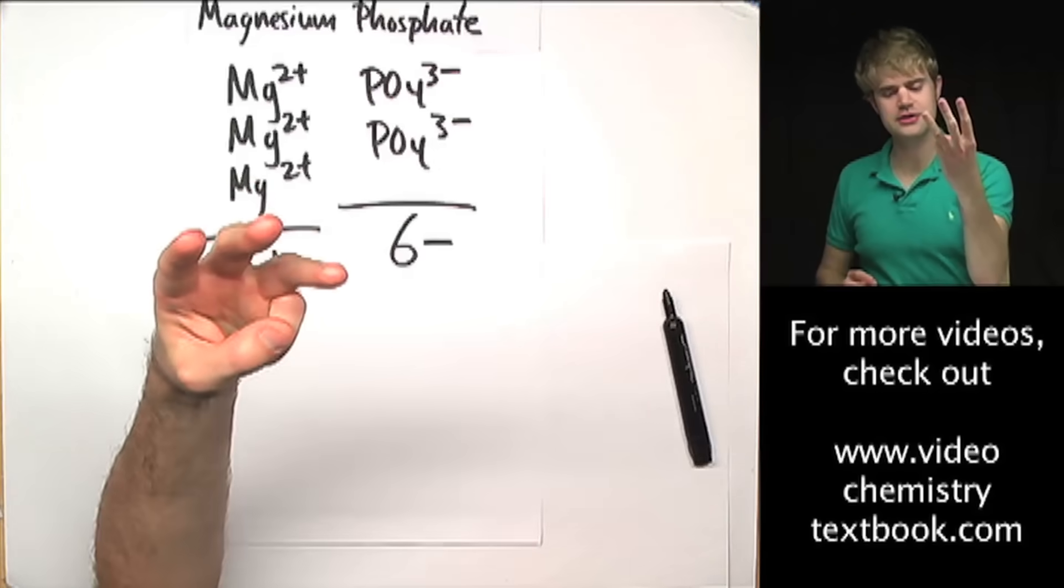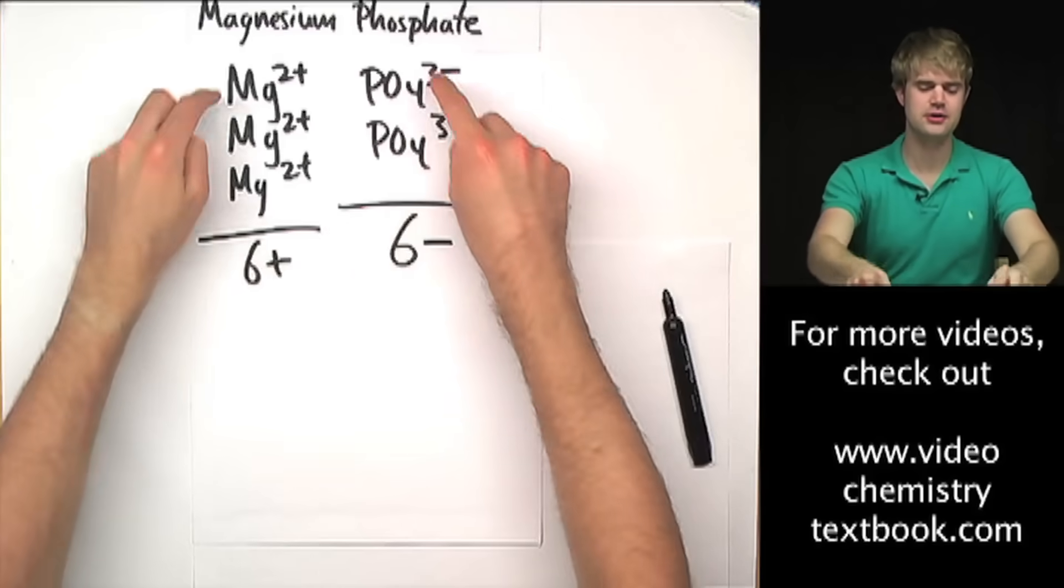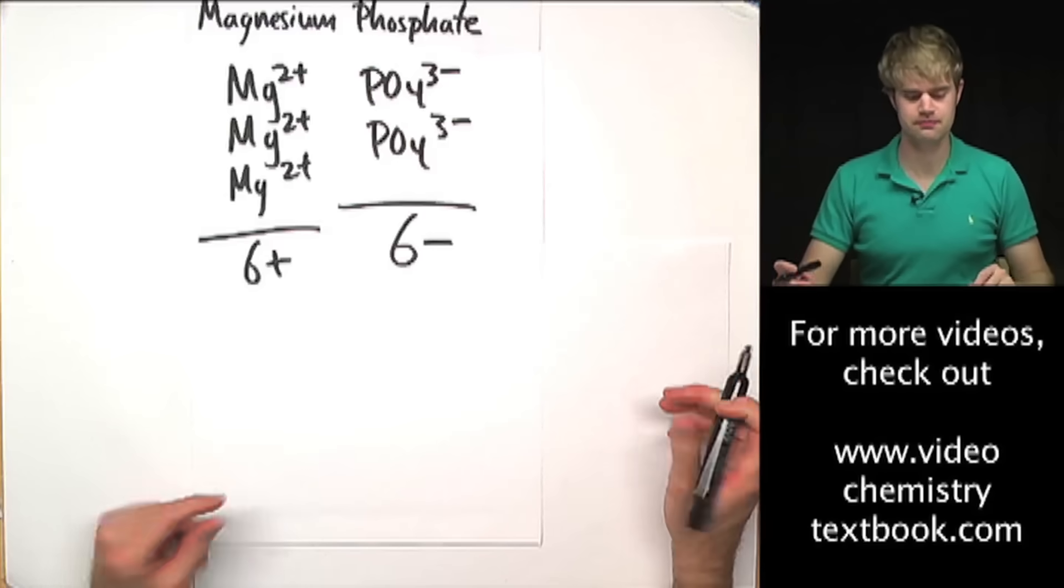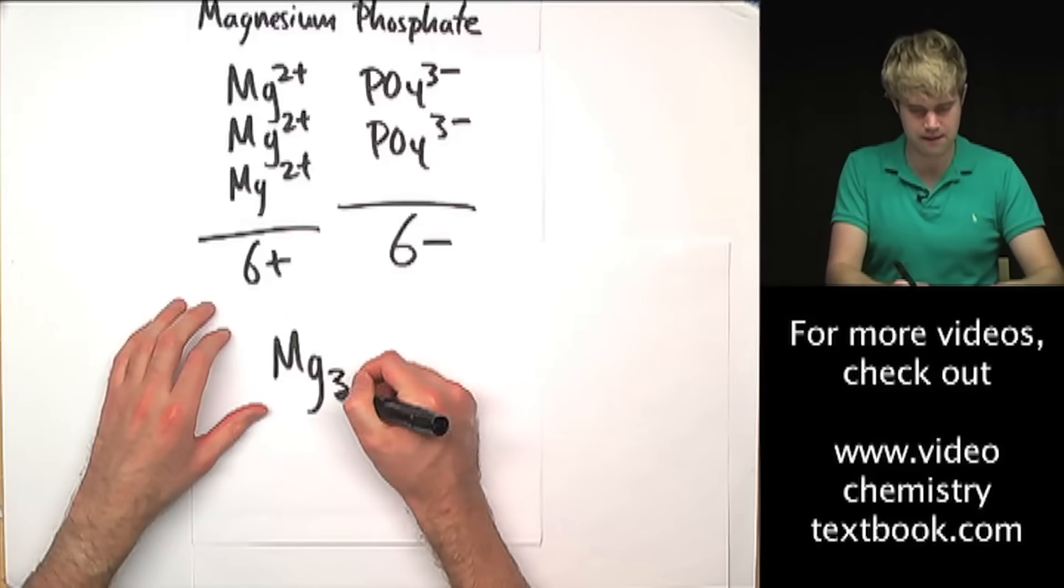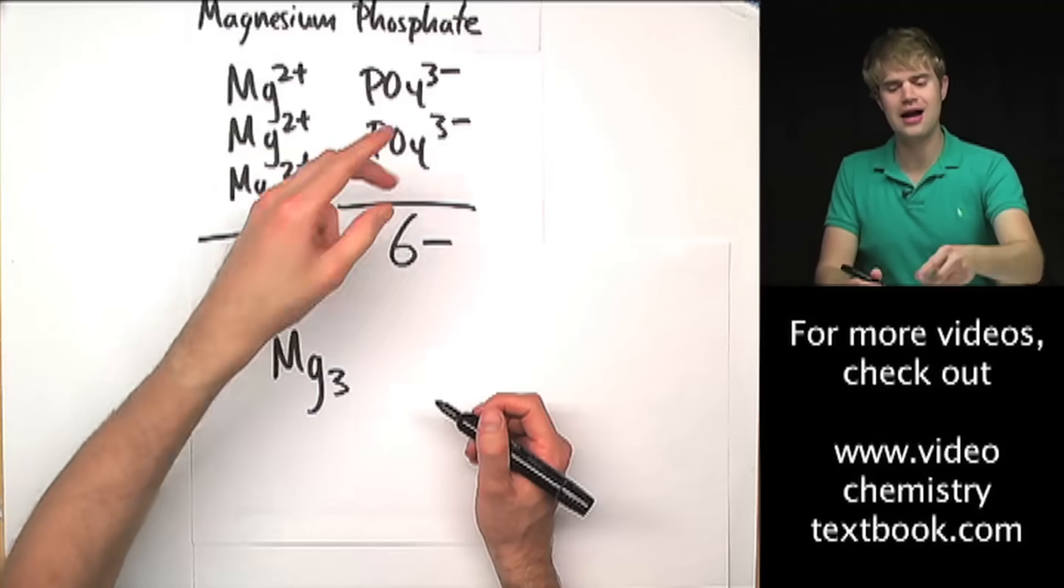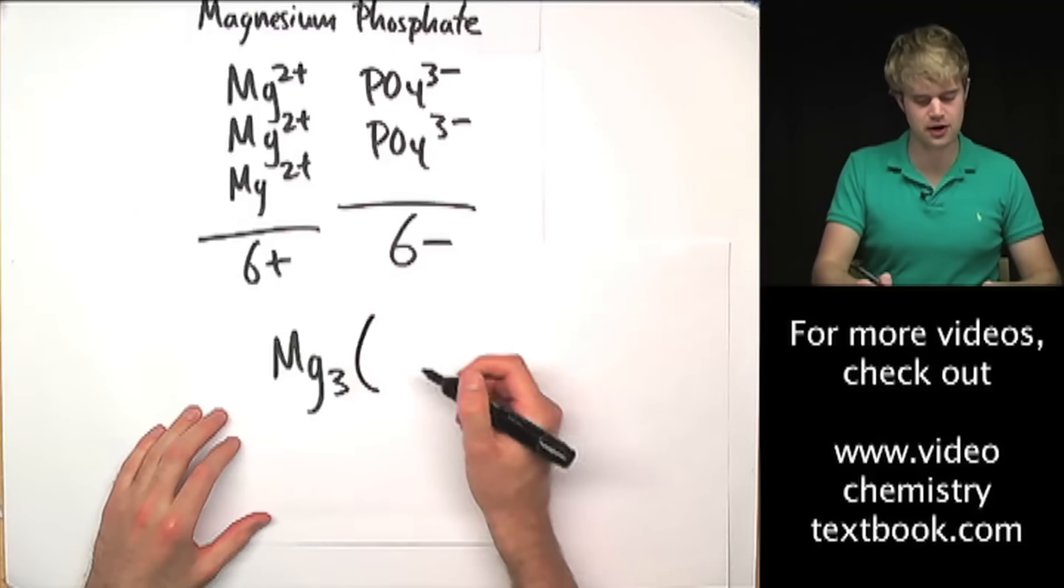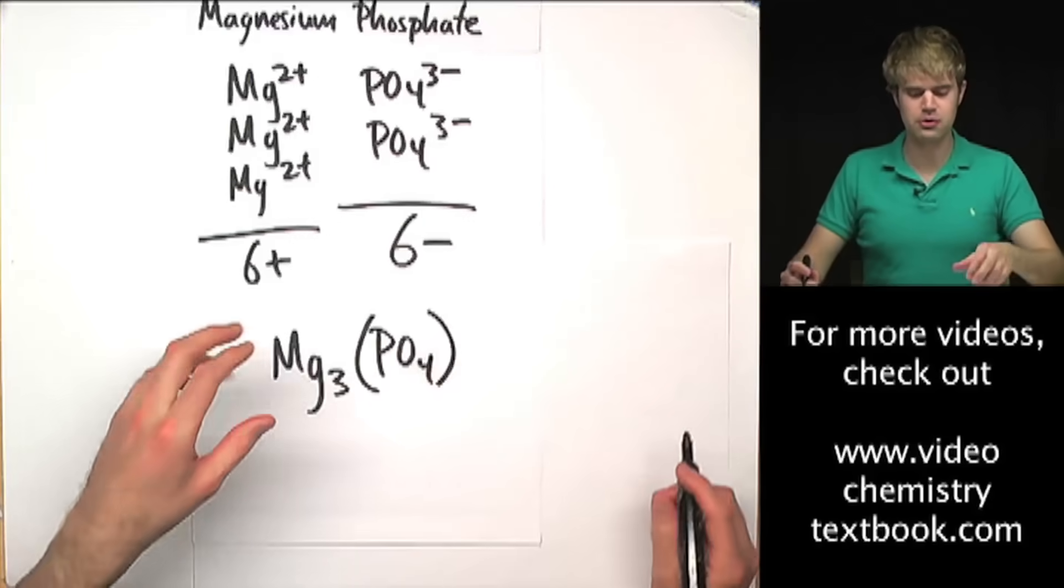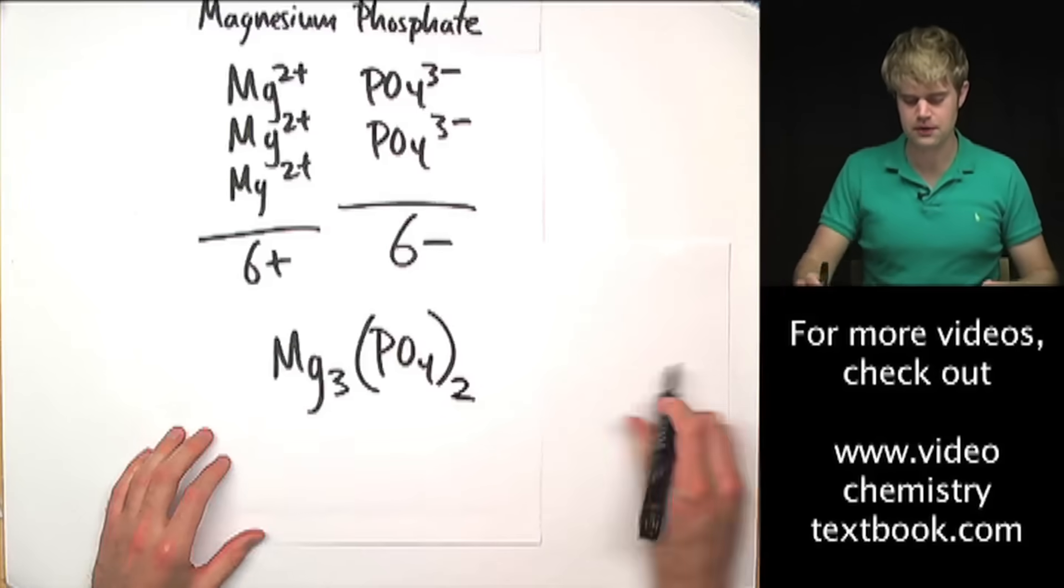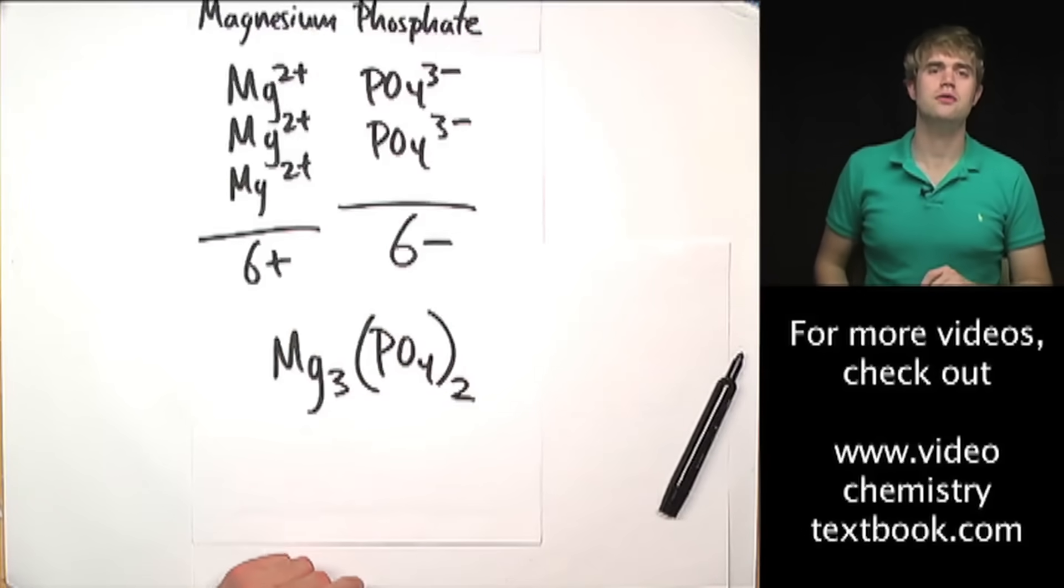Now I'll write this as Mg3 and PO4. I need two phosphates, so I've got to break out those parentheses: PO4, multiply that whole thing by 2 so I use parentheses and put a 2 there.